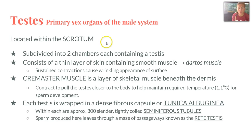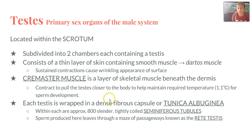The testes is the primary sex organ of the male system. Located within the scrotum, which is subdivided into two chambers containing each testis, it consists of a thin layer of skin containing smooth muscle known as the dartos muscle. It is continually contracting, which causes the wrinkling appearance of the scrotum surface. Underneath is a layer of skeletal muscle called the cremaster muscle, which contracts to pull the testes closer to the body to maintain the temperature requirement for sperm development, about 1.1 degrees Celsius. Each testis is wrapped in a dense fibrous capsule, or tunica albuginea, and within each are approximately 800 tightly-coiled seminiferous tubules. Sperm produced here leave through a maze of passageways known as the rete testis.